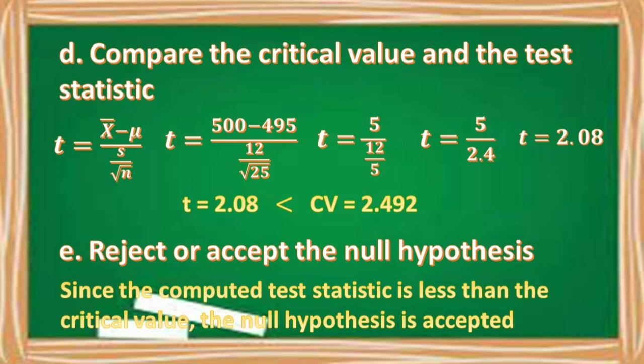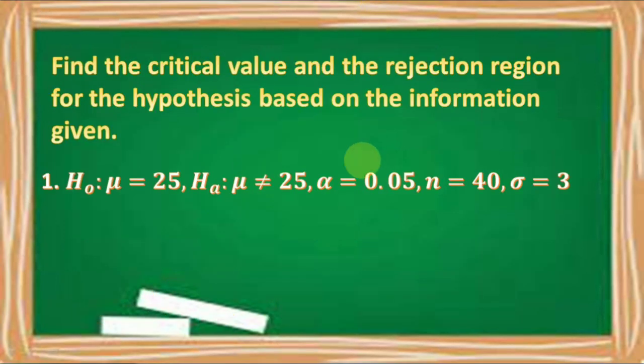E: Reject or accept the null hypothesis. Since the computed test statistic is less than the critical value, the null hypothesis is accepted. In finding the critical value and the rejection region, we have to consider the sample size n: if n is greater than 30, we use the Z-test; if n is less than 30, we use the T-test.